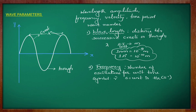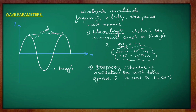The second parameter that defines a wave is frequency. Frequency is the number of oscillations per unit time. It is represented by the symbol nu and the SI unit of frequency is per second. In order to honor the scientist Hertz who invented this term, it is represented as Hertz.